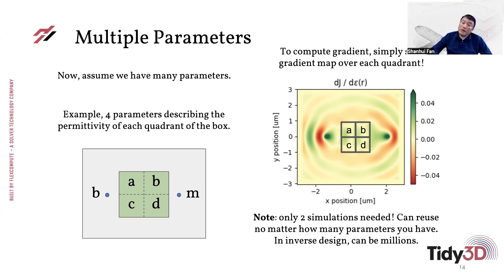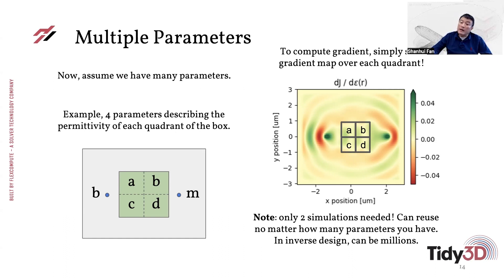This concludes a brief introduction to the mathematics of the adjoint variable method. Next time, we're going to give an example of how to apply this to an actual optimization problem.